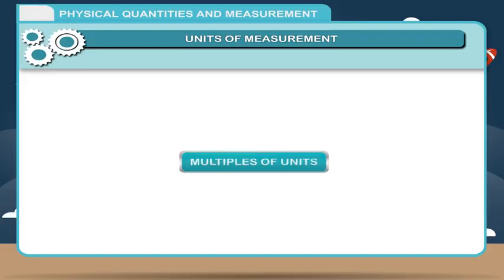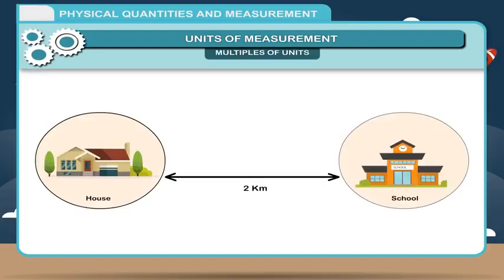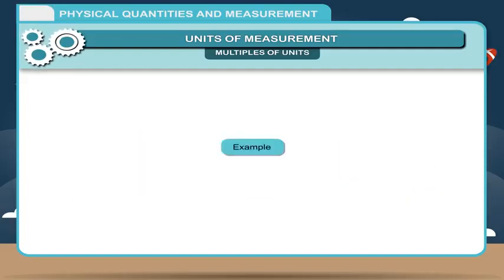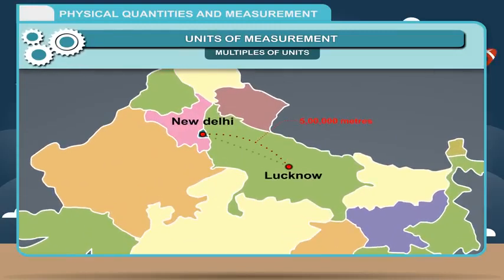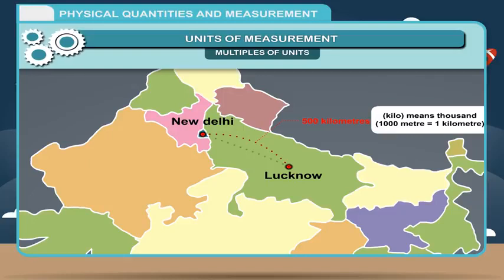Multiples of Units: Multiples are the factors used to create larger forms of units. For measuring long distances, metre and centimetre are not convenient. For example, the distance between Delhi and Lucknow is approximately 5 lakh metres, which is inconvenient to use. The easier way is to say the distance is 500 kilometres, where kilo means 1000, so 1000 metres equals 1 kilometre. These higher units are called multiples of units.